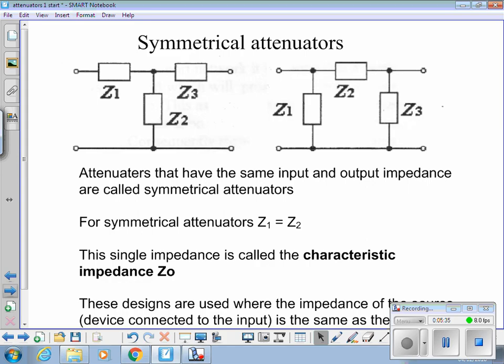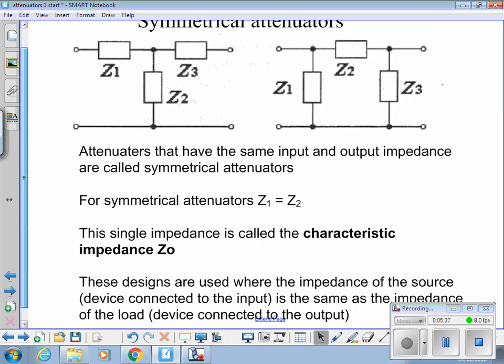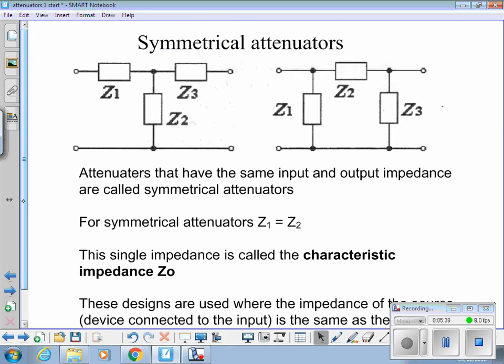Now we're into whether the input and output impedances are the same. Symmetrical attenuators. These are the type we're going to design. They are where the input and the output impedance of the attenuator are exactly the same. Both 50 ohms, both 100 ohms, both 600 ohms, so on.